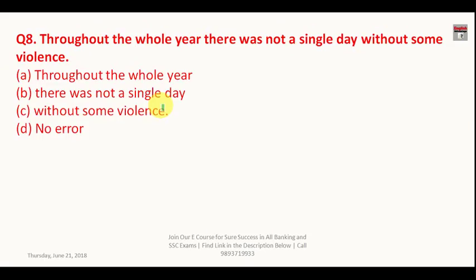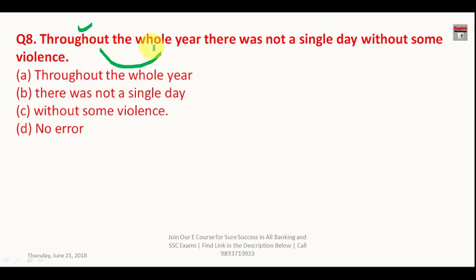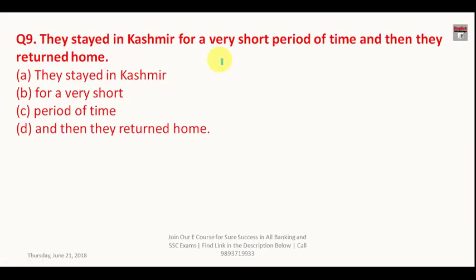Question number eight: 'Throughout the whole year there was not a single day without some violence.' This is a mistake of superfluous words. 'Throughout' already means the whole period, so using 'whole' alongside it is redundant. You should say either 'throughout the year' or 'the whole year.' This part is wrong and the answer is A.